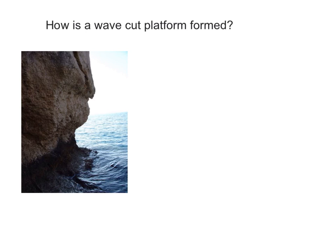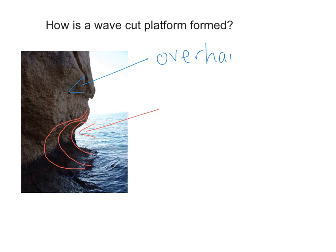How is the wave-cut platform formed? It happens during high tide when the waves have most energy and they start to erode the base of the cliff to create what we call a wave-cut notch. That wave-cut notch becomes deeper and deeper, creating above it something called an overhang. The overhang can become so heavy that it topples over.